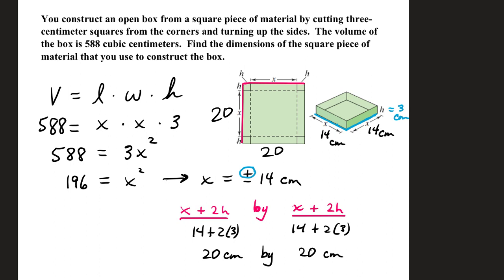You construct an open box from a square piece of material by cutting 3 centimeter squares from the corners and turning up the sides. The volume of the box is 588 cubic centimeters. Find the dimensions of the square piece of material.